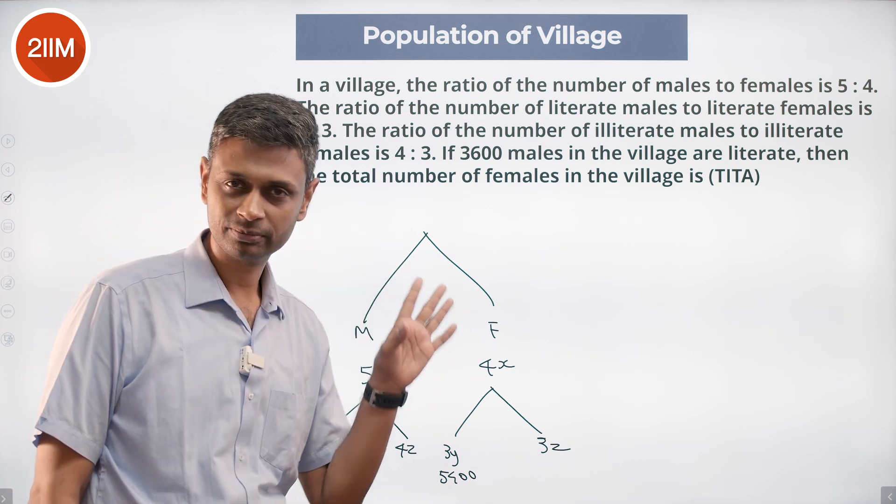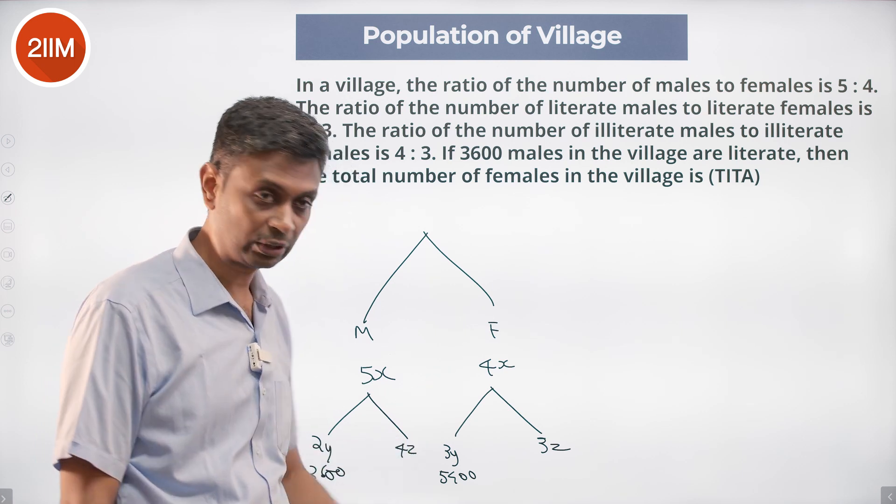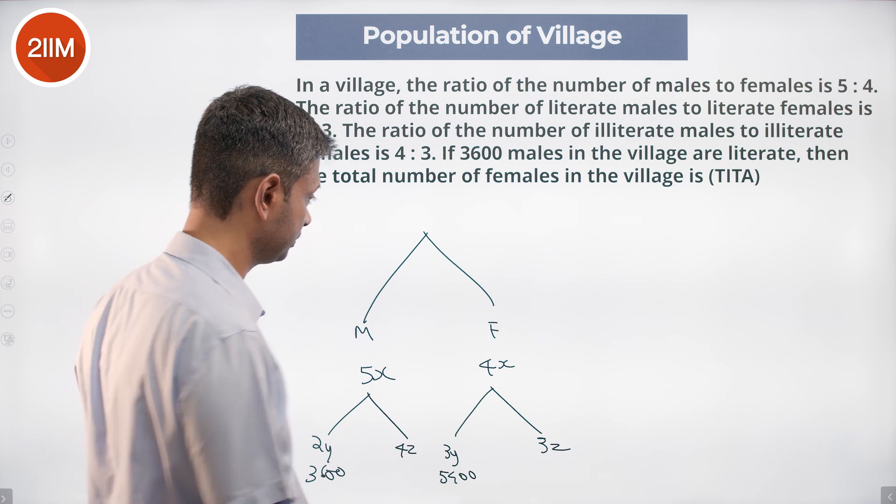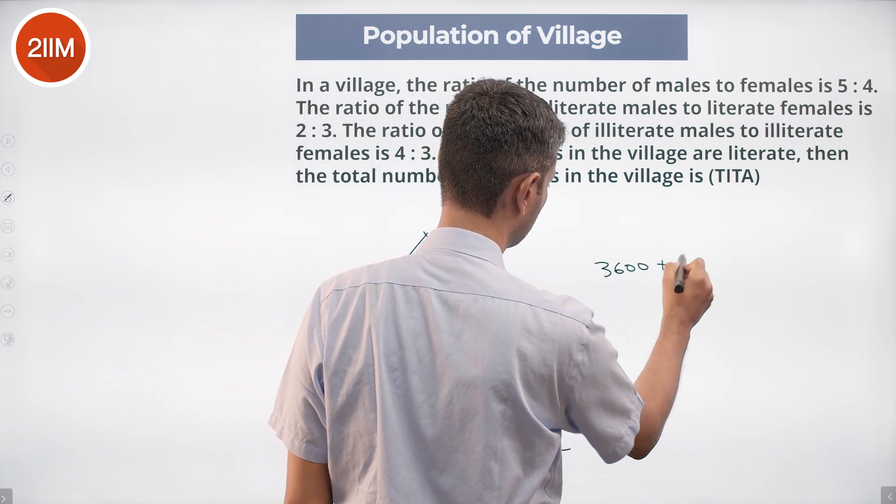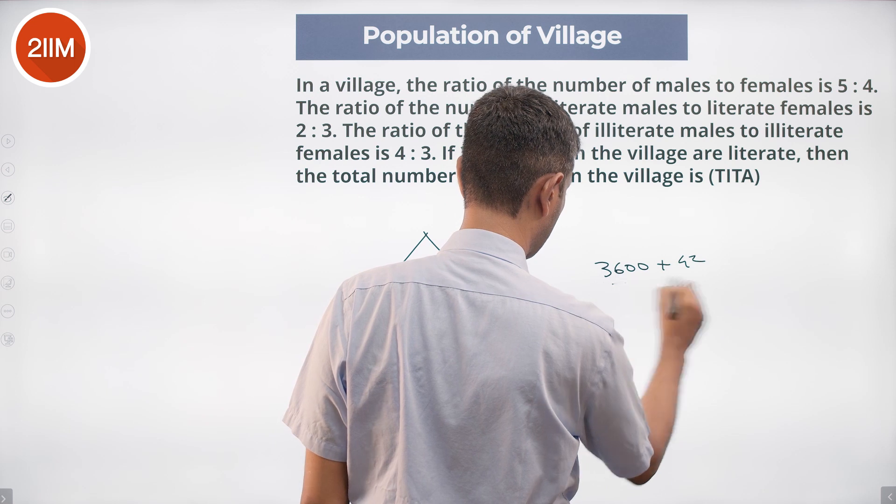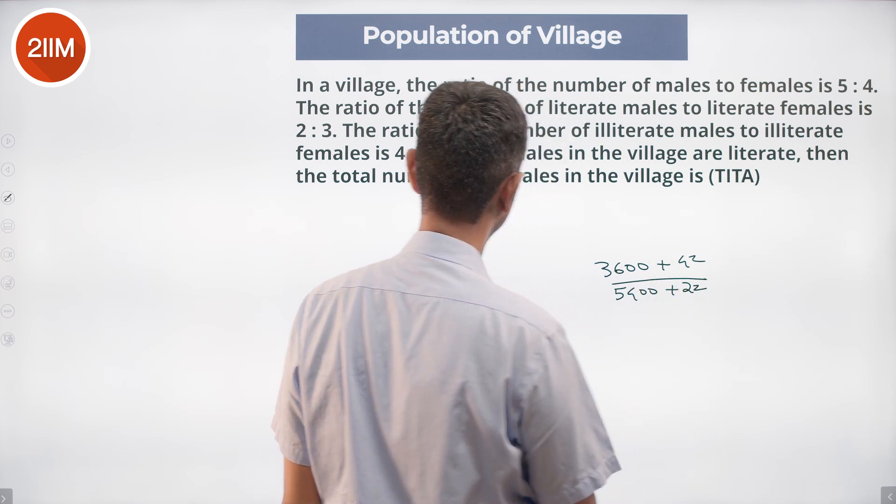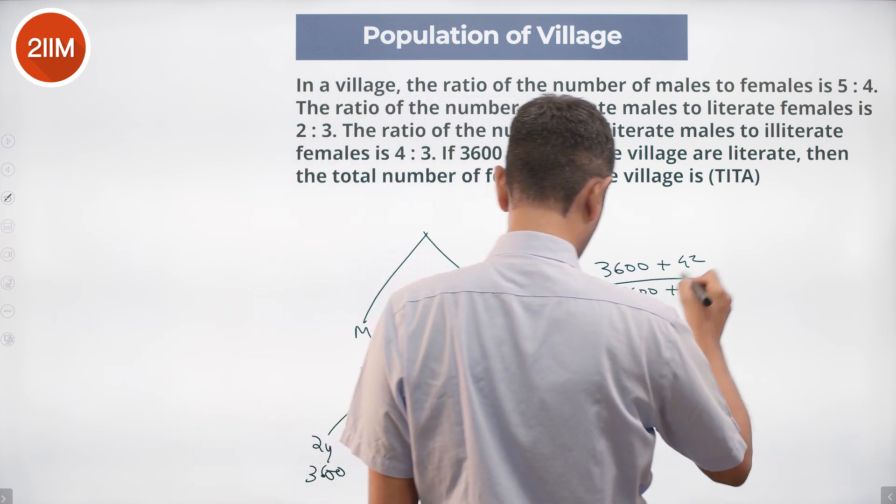We know literate males is 3600 and literate females is 5400. We know 3600 plus 4Z over 5400 plus 2Z equals